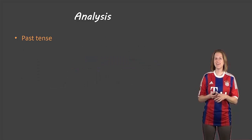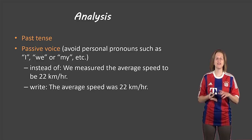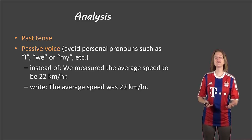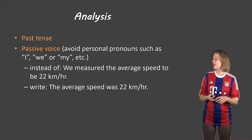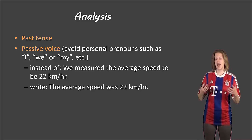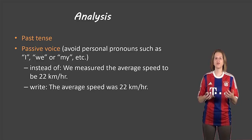Final thing, it must be in past tense and it needs to be in passive voice. And we use passive voice to avoid personal pronouns like I, we, me, us, and so on. Your English teachers hate passive voice, but in science we need to use it. So instead of writing, we measured the average speed to be 22 kilometers an hour. Instead, you would write the average speed was 22 kilometers per hour. So we avoided using the word we.